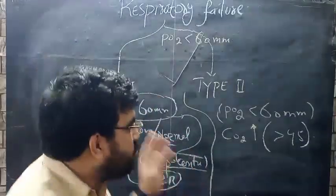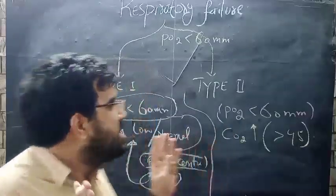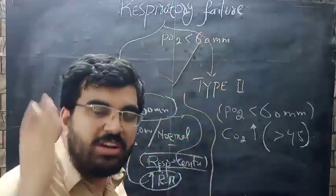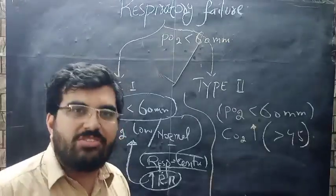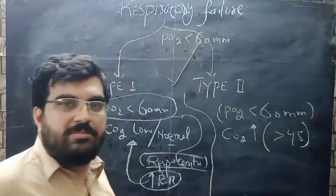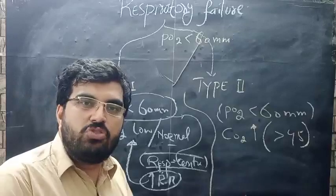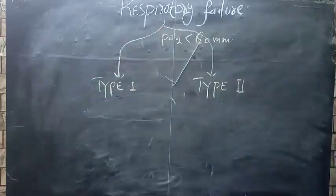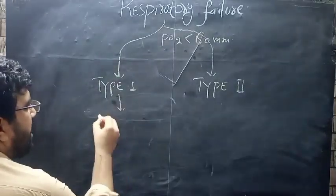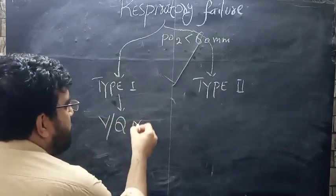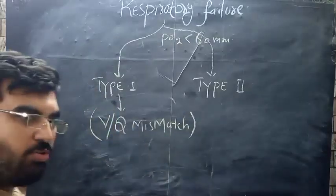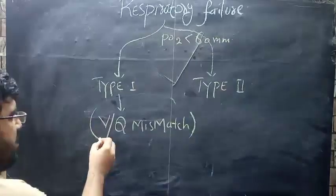Now we are moving toward the basic mechanism. If you know the mechanism of Type 1 and Type 2 respiratory failure, you automatically know the causes. If you know the causes, treat them if treatable and manage accordingly. The key mechanism in Type 1 respiratory failure is VQ mismatch — ventilation-perfusion defects.